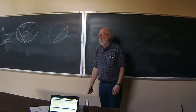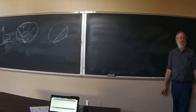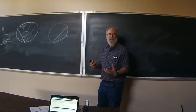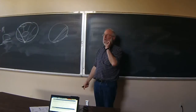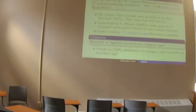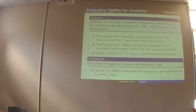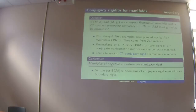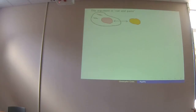You have a notion of C^k conjugacy-rigid Riemannian manifolds — those for which any manifold with a geodesic flow C^k conjugate to your geodesic flow must be isometric. The conjecture is that manifolds of negative curvature are conjugacy rigid. This is very much open except in two dimensions. Simple subdomains of conjugacy-rigid manifolds are boundary rigid — this is one way of finding boundary-rigid manifolds: start with a conjugacy-rigid manifold and take simple or SGM subdomains.